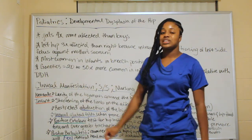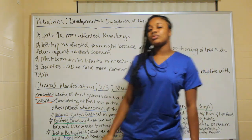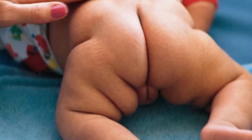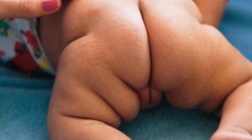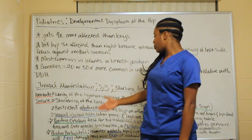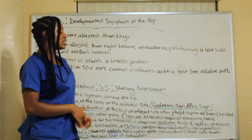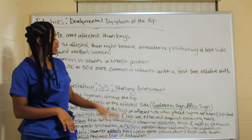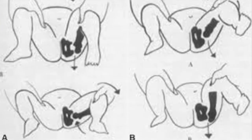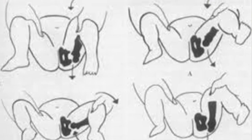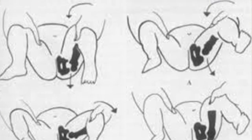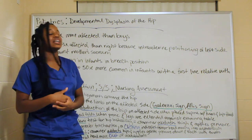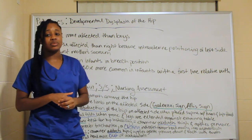You're also going to see unequal gluteal folds when the baby is prone with legs extended — more folds on one side, or a series of folds. A positive Ortolani test checks for hip instability: the examiner abducts the hip and applies pressure forward over the greater trochanter. You will hear a clicking noise, indicating the femur is moving into the acetabulum.